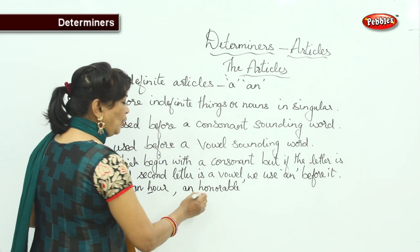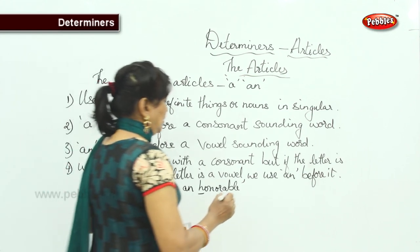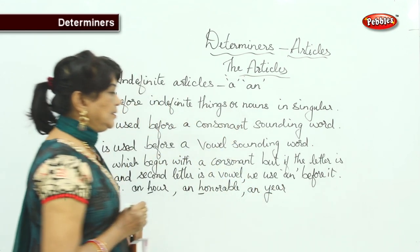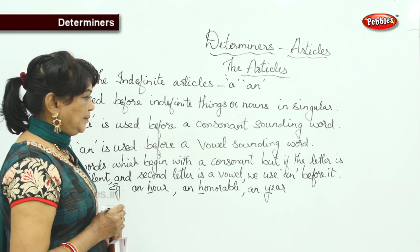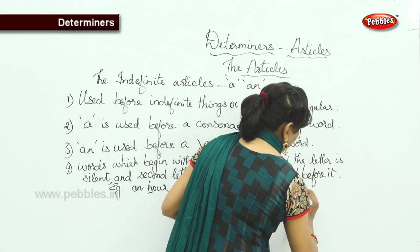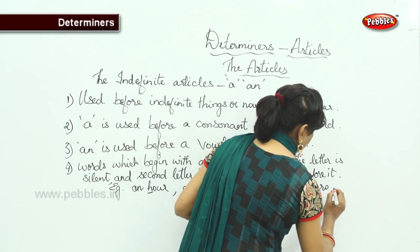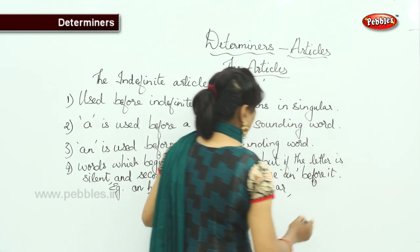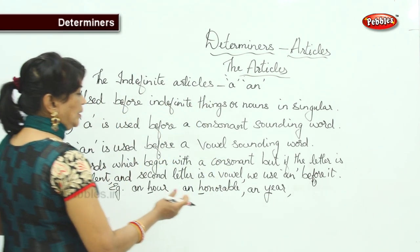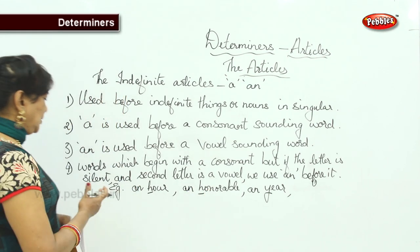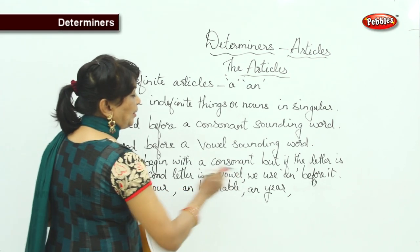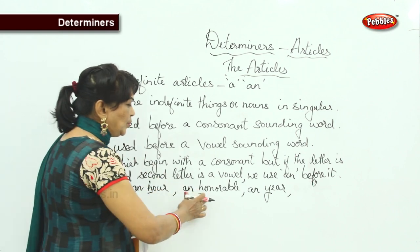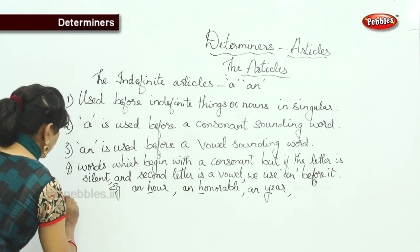'An ear' — because the first letter is silent. So: 'an honour', 'an hour', 'an honourable person', 'an ear' — in all these the first consonant letters are silent. So we take the next letter, which is a vowel, and use 'an'. Remember: it is the sound that matters, not just whether the word begins with a vowel or consonant letter.